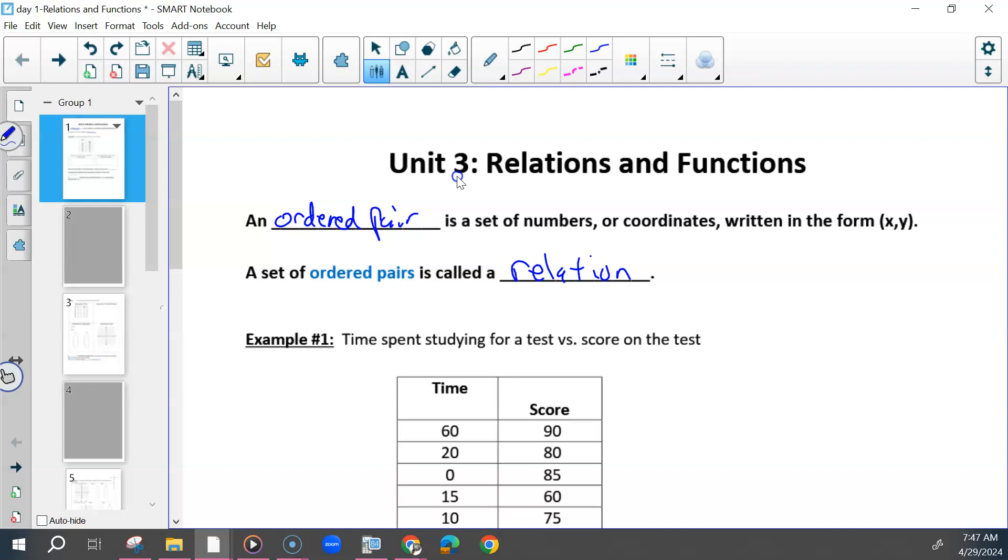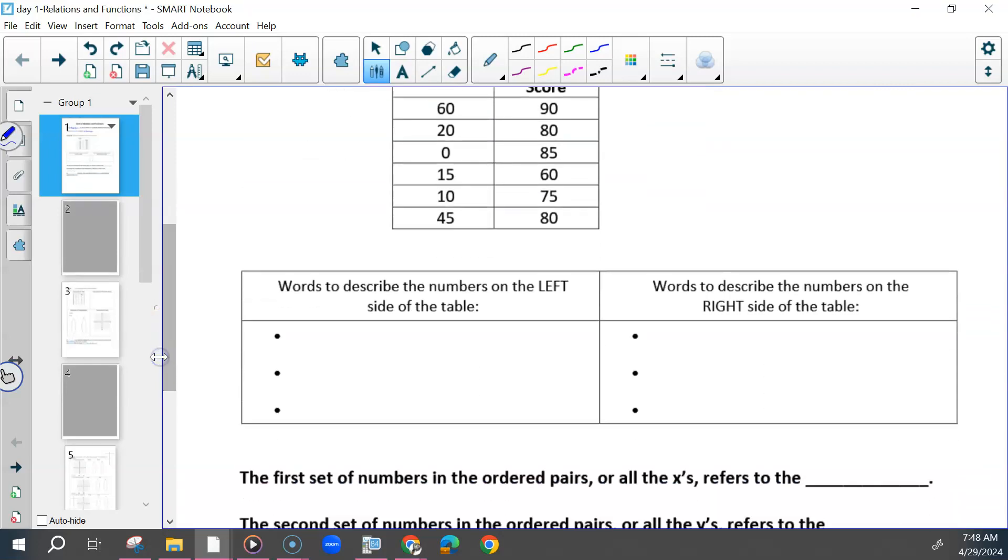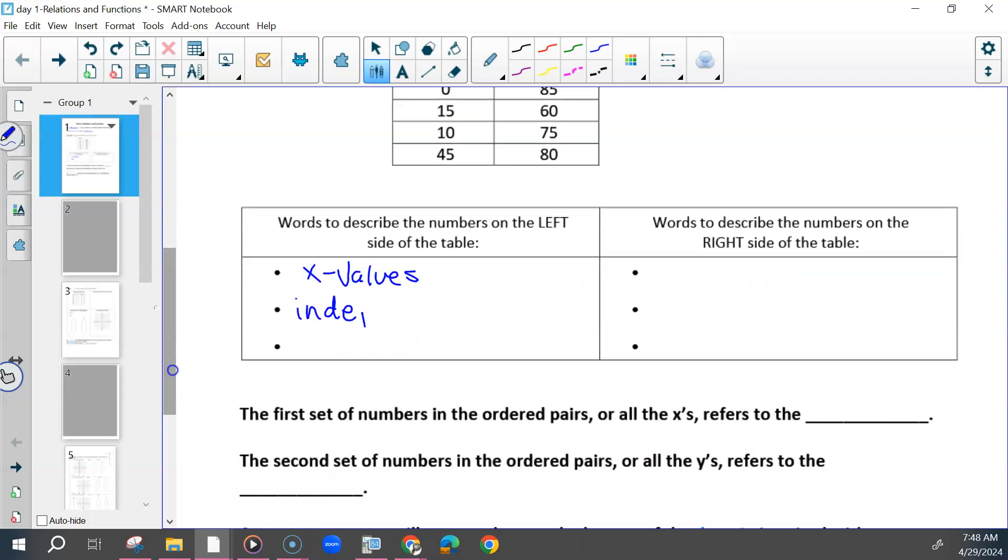They give an example of this table, the time spent studying for a test versus the score on a test. If I were to describe the left side of this table, what would I call this left side? Your X values are usually your independent variables. They can stand alone all by themselves.